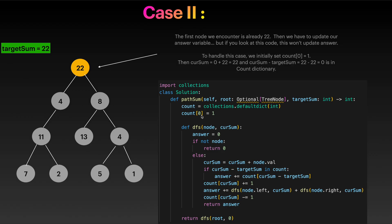We initialize count of 0 equal to 1. This handles the case where the first node is exactly equal to the target sum. The rest is basically similar to what we have seen in Path Sum 2 and Path Sum 1.